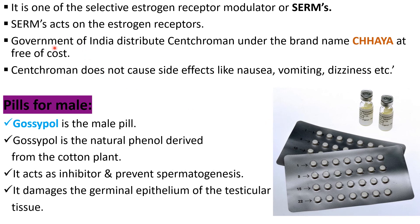Centchroman is a selective estrogen receptor modulator (SERM). It acts on the estrogen receptors, modulates them, and creates instability in the secretion of estrogen levels, thereby disturbing the environment for pregnancy. The Government of India distributes the Centchroman tablet under the brand name Chhaya at free of cost.